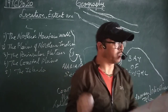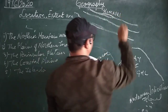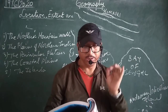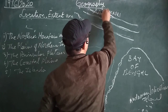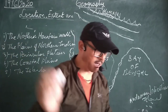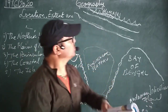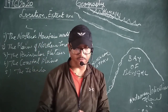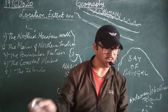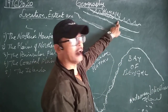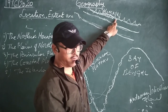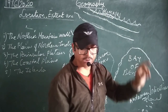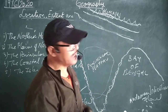Number one is called Himadri — the topmost range. We call it Himadri because it remains covered with snow throughout the year. It is also known as the Great Himalayas or the Inner Himalayas. It forms the northernmost part of the Himalayan ranges, and here you can find the world's highest mountain range.